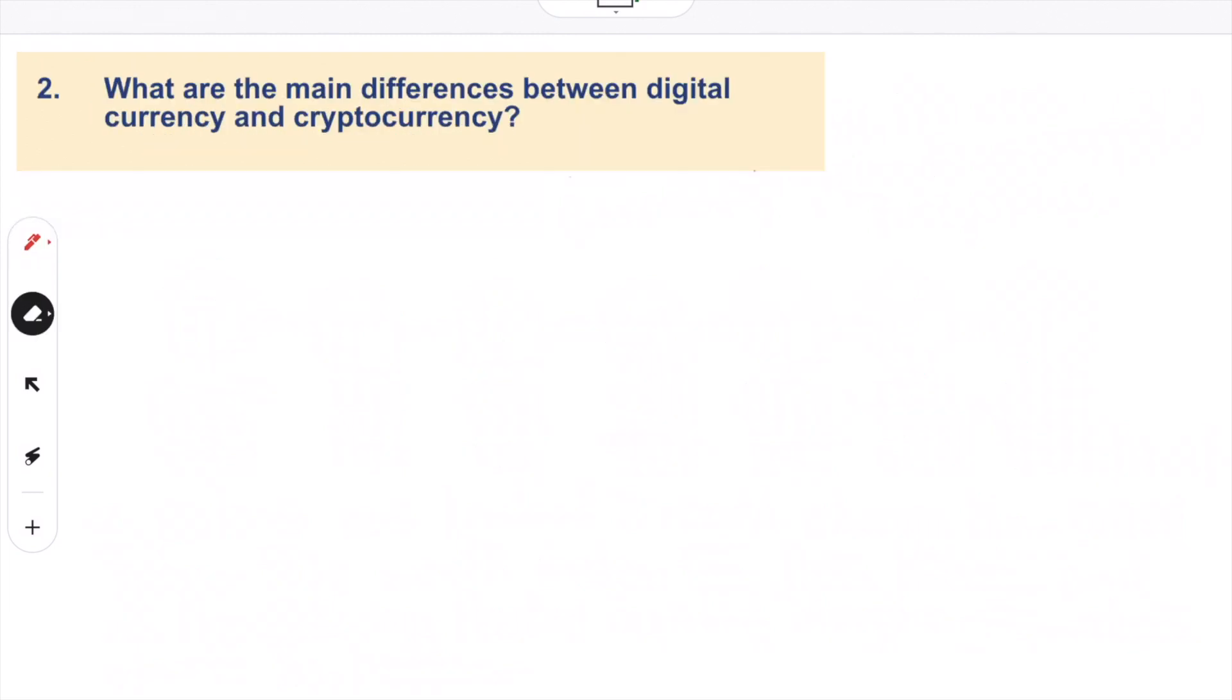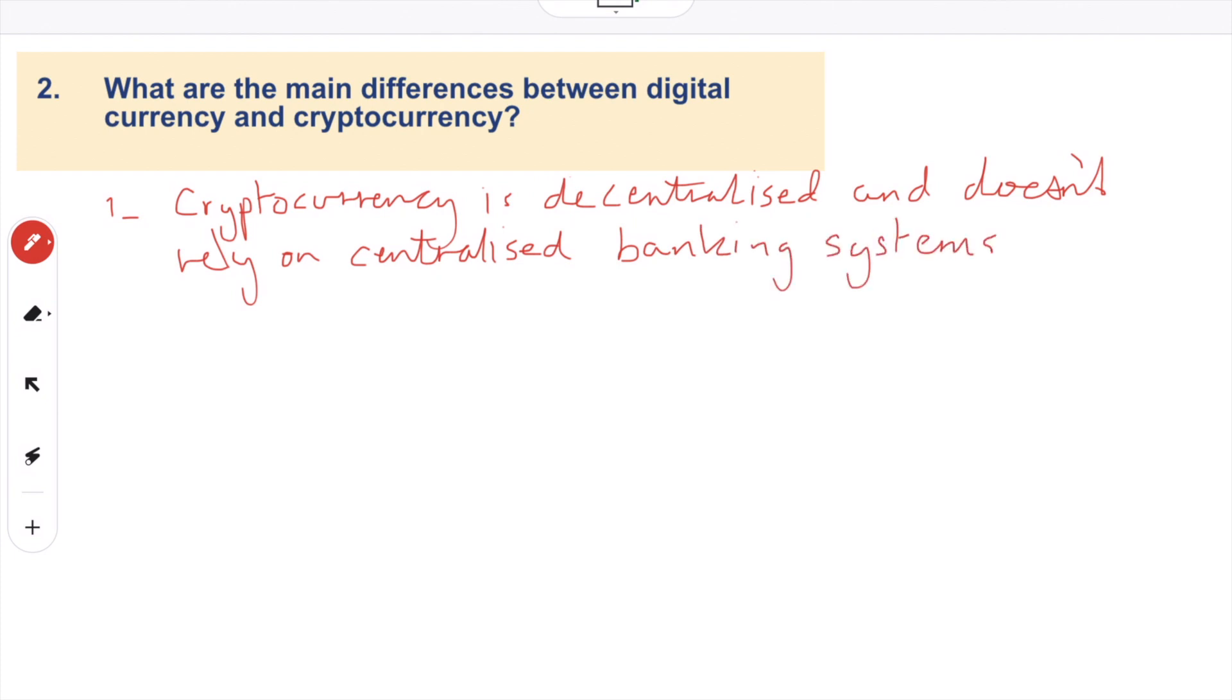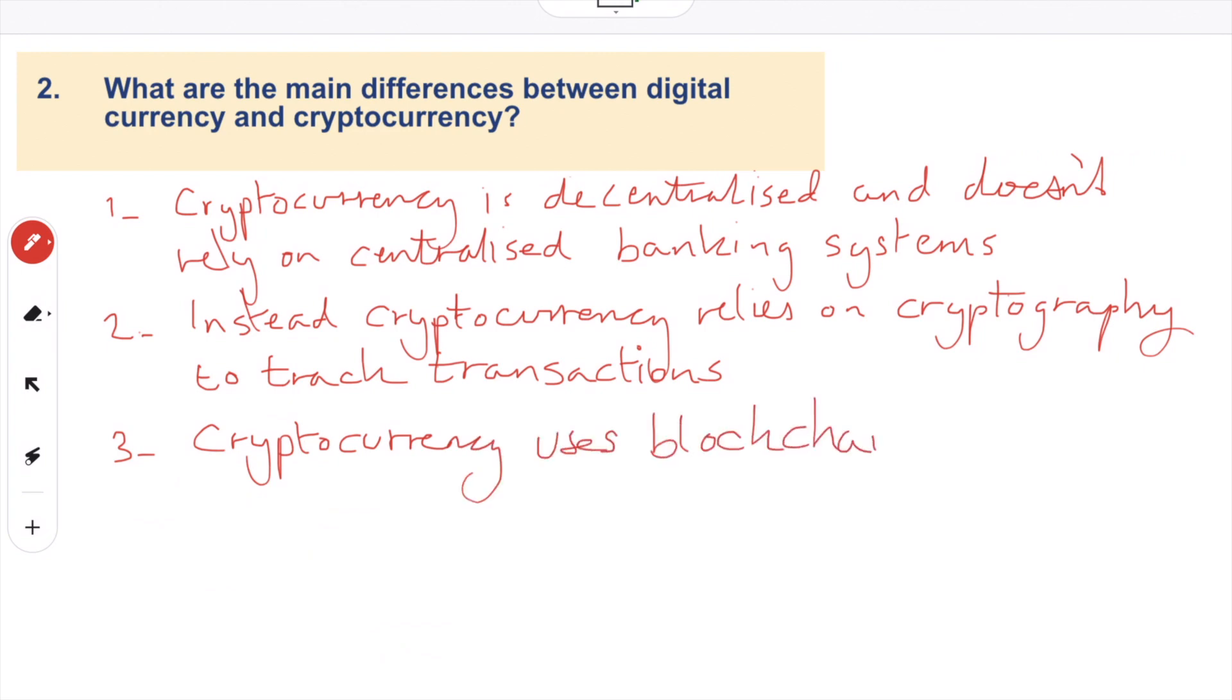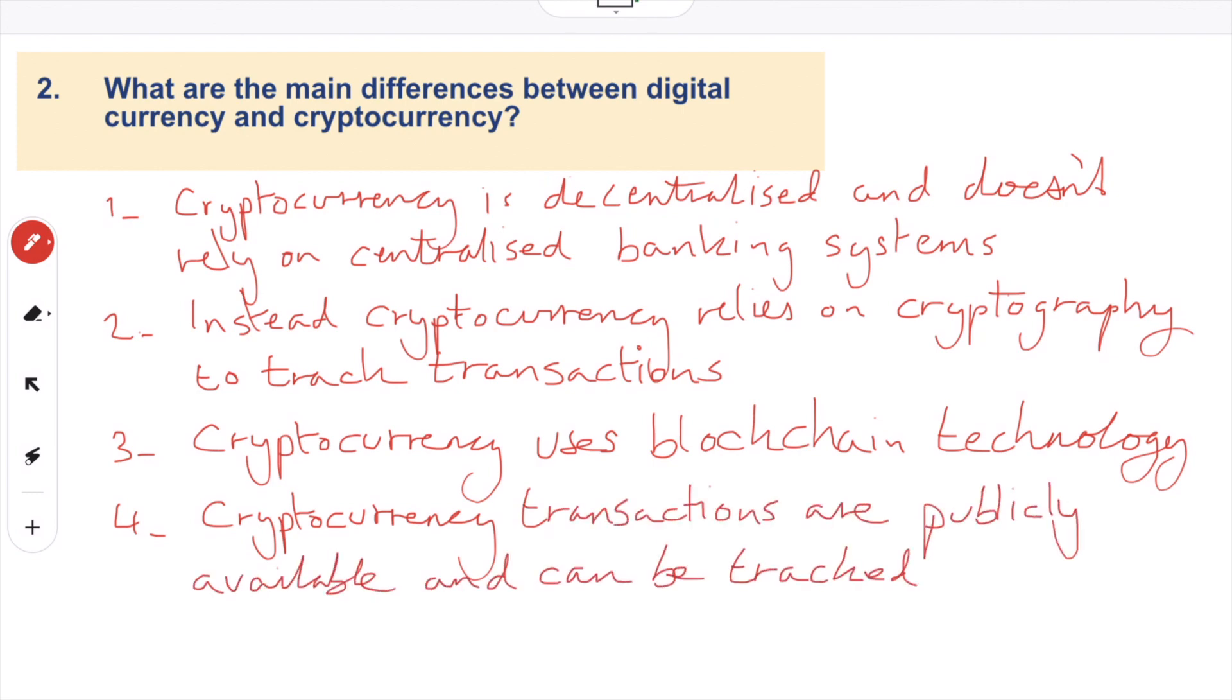Question two: What are the main differences between digital currency and cryptocurrency? Well, number one, cryptocurrency is decentralized and doesn't rely on centralized banking systems. Instead, the cryptocurrency relies on cryptography, so there's a type of encryption to track these transactions. Three, cryptocurrency uses blockchain technology, which we've just talked about. And then the fourth difference, cryptocurrency transactions are publicly available. Anybody who's got access to the network can see the transaction, and these can be tracked and monitored to make sure everything's secure and everything is running appropriately.